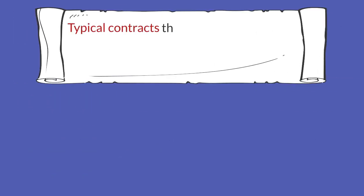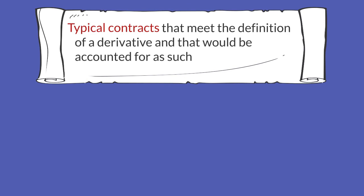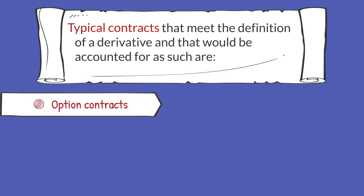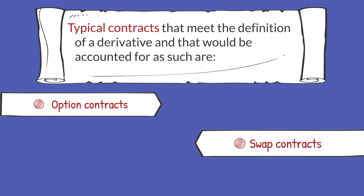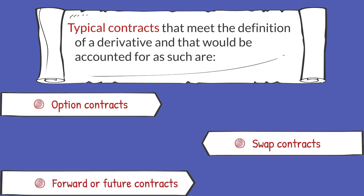Typical contracts that meet the definition of a derivative and that would be accounted for as such are option contracts, swap contracts, and forward or future contracts.